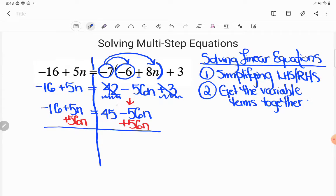And now let's see what my new equivalent equation will be. Well, on the right-hand side, something really cool happened. That's what I wanted. That subtracting 56n and adding 56n are opposites. They canceled. So all I have left is 45. And then on the left-hand side, I didn't touch my negative 16. But here, positive 5n plus 56n is going to give me 61n. So now I simplified my left and right-hand side. I got my variable terms together.